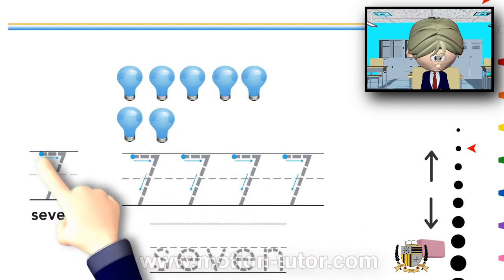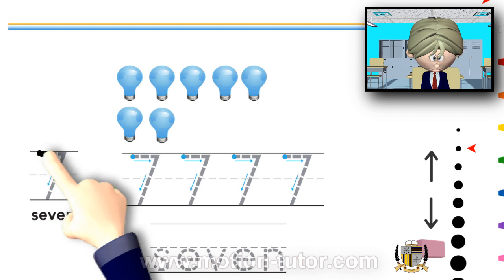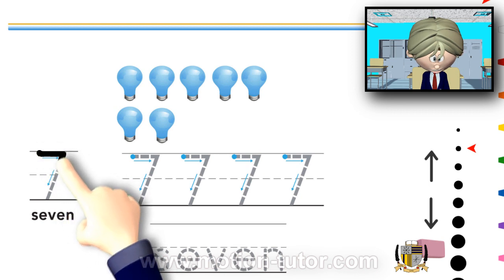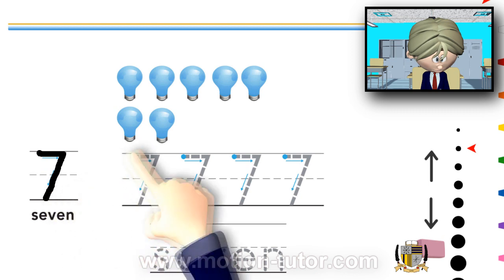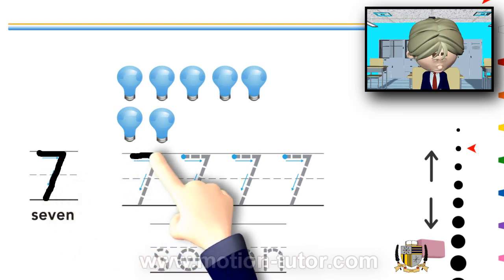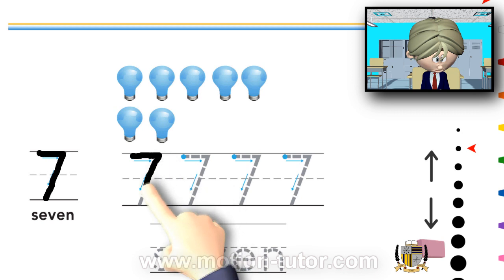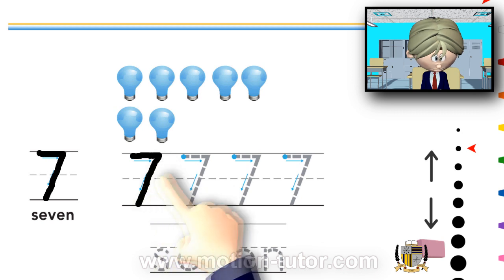And now, let's trace the number 7. You go like this, and then you go down and to the left a little bit. You go across the top, and then go down and to the left a little bit.